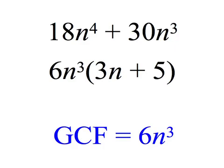Notice, another thing that we've done is we've essentially applied the distributive property in reverse order from how we usually use the distributive property. If you now apply the distributive property from the middle line, 6n to the third times the quantity 3n plus 5, if you multiplied both those terms, the 3n plus 5 times 6n to the third, you would, of course, get the binomial at the very top.